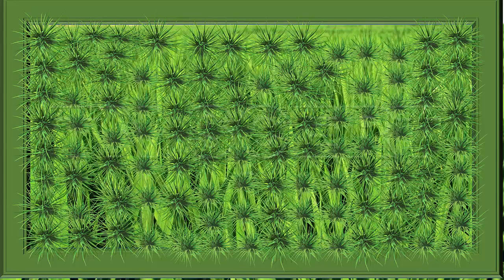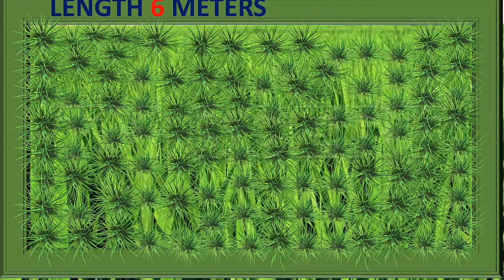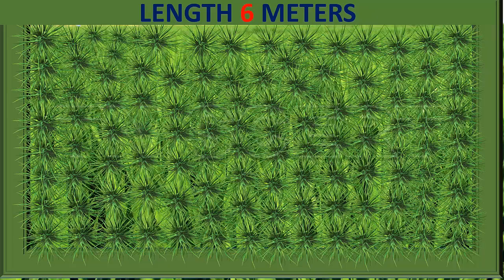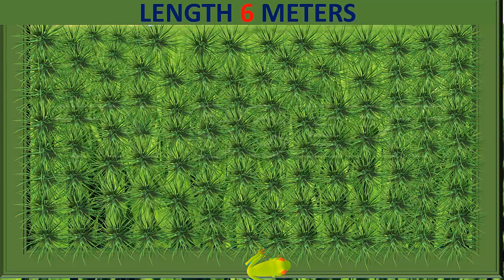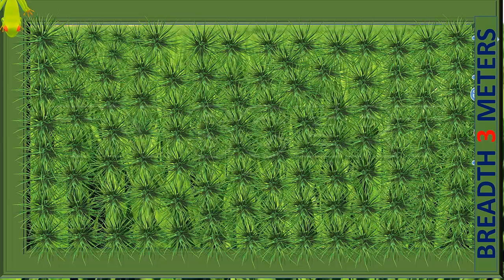Now, let's look at this in a formula method. The length of this rectangular field is 6 meters and the breadth is 3 meters. The frog jumps 6 times to measure the length of 6 meters and it jumps 3 times to measure the breadth of 3 meters.